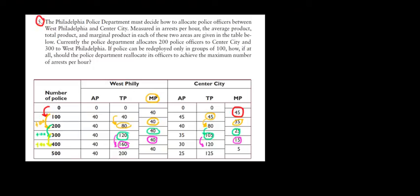For the last hundred police, going from 400 to 500: total arrests in West Philly go up to 200, an additional increase of 40 arrests. If allocated to Center City, they would increase total production from 120 to 125 — just an additional 5 arrests. Clearly 40 is much better than 5, so they're much more productive in West Philly.